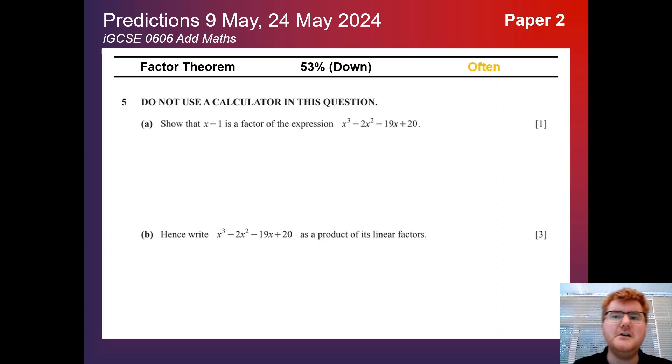Now, Paper 2 has changed quite a bit in what I've predicted so far. Factor theorem here is a good example of that. It's now slightly down at 53%, so generally it will come up on one paper, but less frequent than before. Often they do not use a calculator style question with the factor theorem, so please be aware of that.